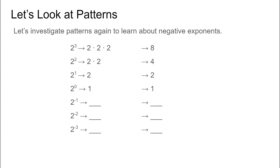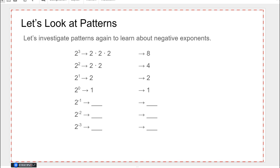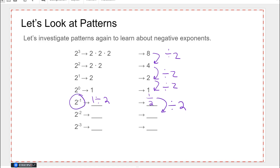Finally we're going to talk about negative exponents, and we'll start by looking at patterns again — something similar to what we did when exploring the zero exponent. We're dividing by two each time. So we have one last two to multiply, meaning it's really one divided by two — let's write that as a fraction: one over two. Keep dividing by two: two to the negative one is one over two; two to the negative two is one over two squared, which is one over four; two to the negative three is one over two cubed, which is one over eight.